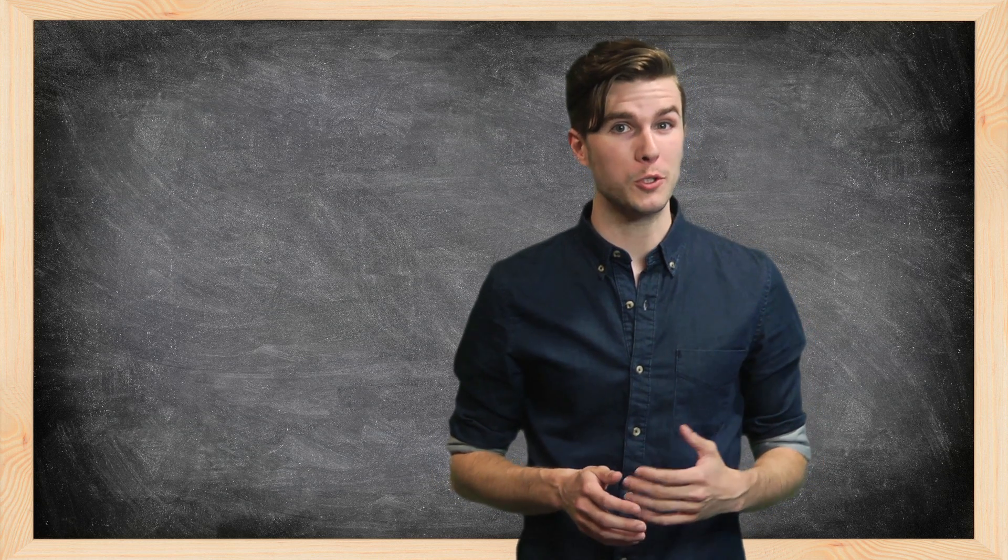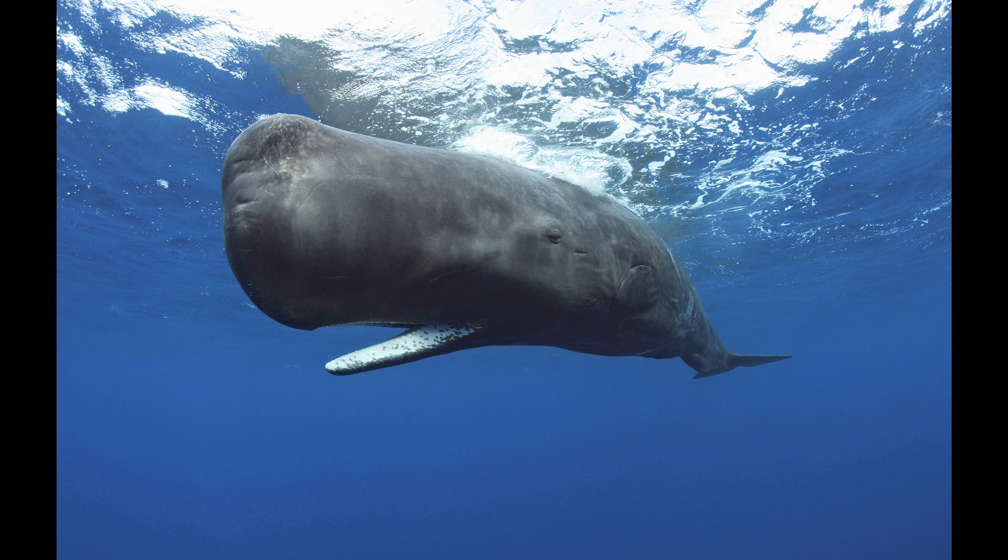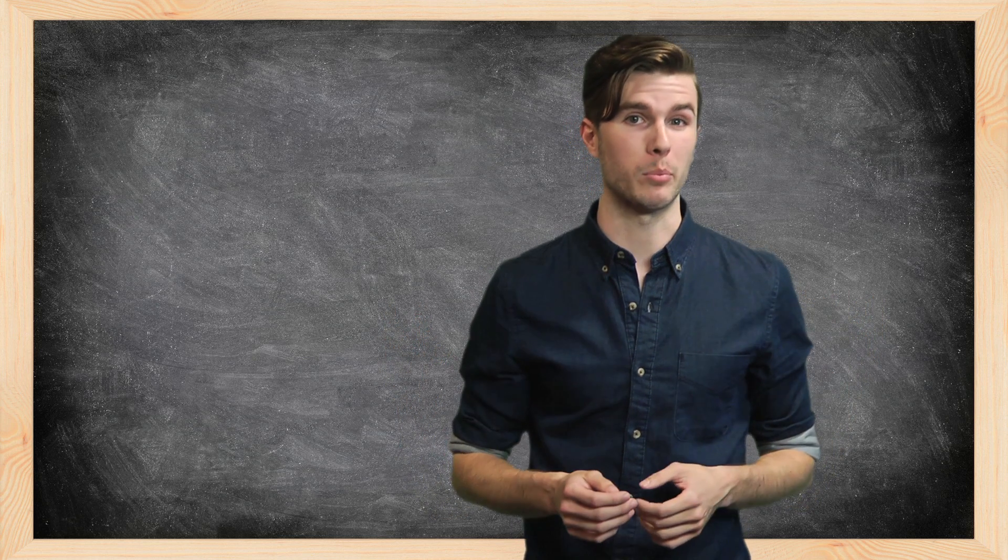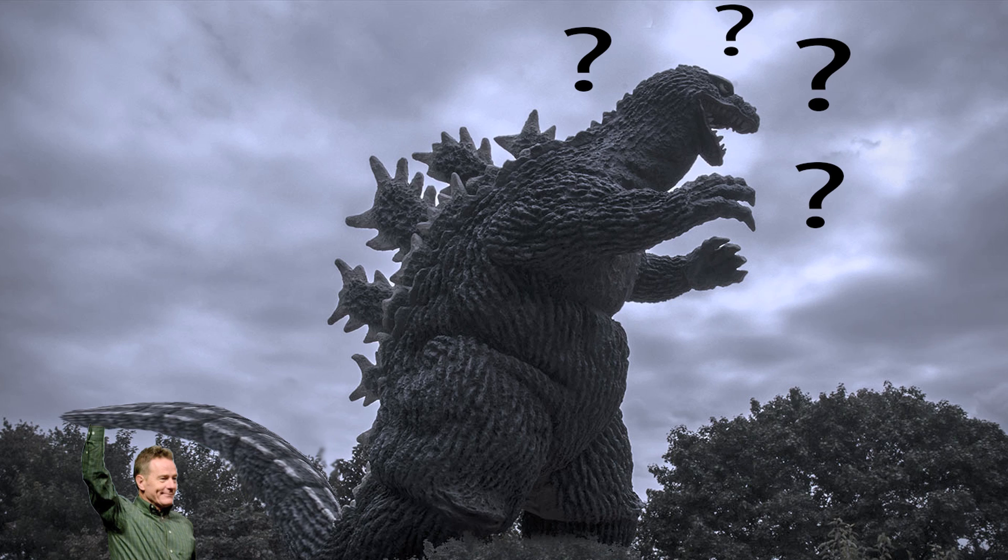But Godzilla would also have an incredible reaction time. Larger animals, such as whales, have nerves that are so long it takes a few seconds for information to travel their whole body length. Godzilla would have the same problem. If Bryan Cranston tugged on Godzilla's tail, for example, the Kaiju wouldn't even sense it for at least a few seconds.